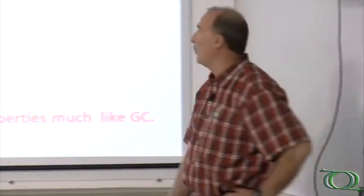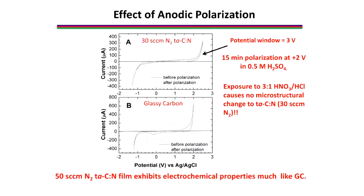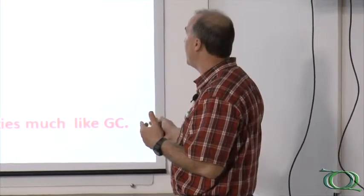We look at things like the potential window to give us some indication of the quality of the material. This again is a measurement in sulfuric acid. You can see that our window here is roughly from about two volts to about minus one. So we have about a three volt potential window, which is very typical for diamond materials. One of the interesting things about this is that you can apply some anodic potentials, you can expose it to some very aggressive solutions, and the microstructure is very stable.